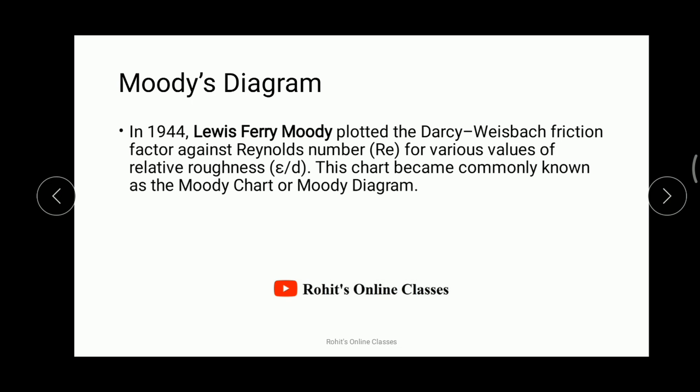This is a graphical representation of three factors: the Darcy-Weisbach friction factor, the Reynolds number, and the relative roughness of the pipe. This graphical representation is generally known as Moody's chart or Moody diagram. We also need to understand the formula for frictional head loss in a pipe, which is the Darcy-Weisbach equation.